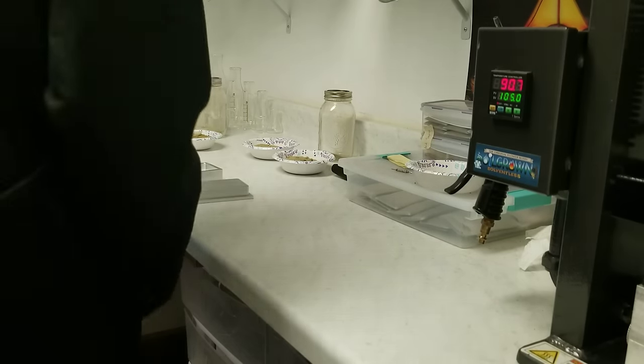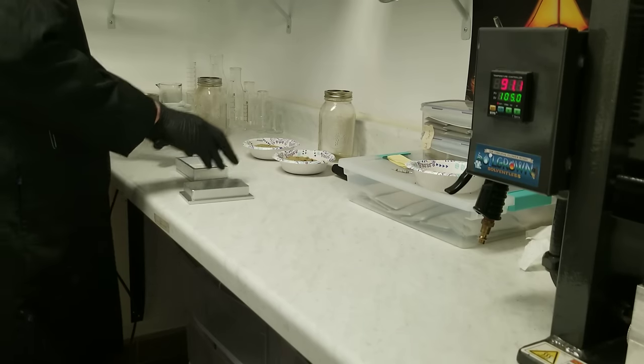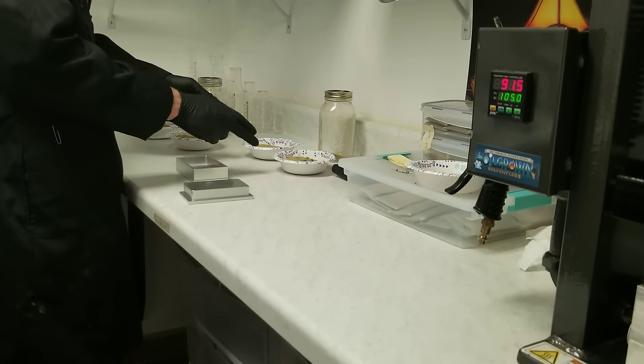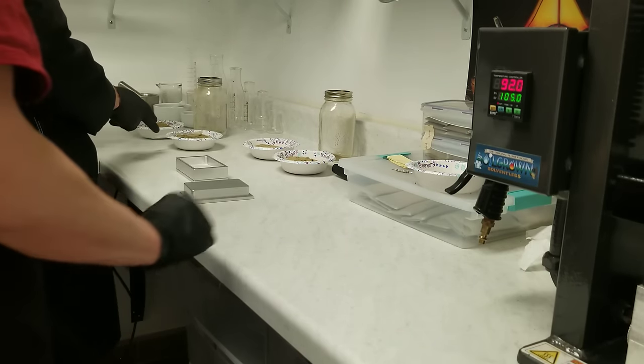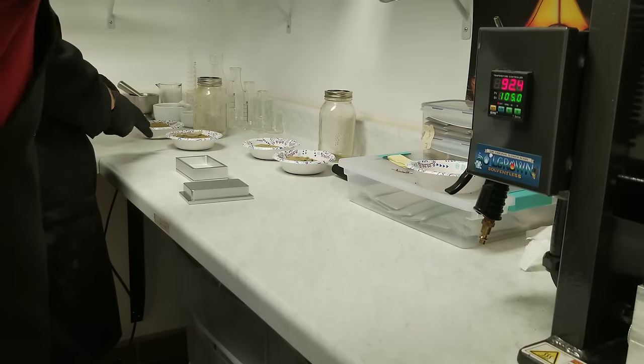Okay, so today we're making hash bricks. We have two bowls: 47 grams of Bruce Banner kief, two bowls of 45 grams of Gold Leaf kief.